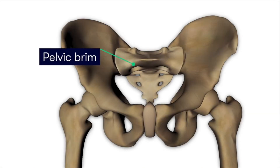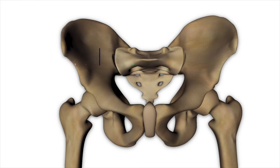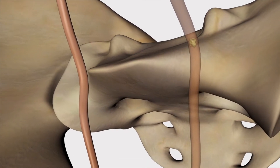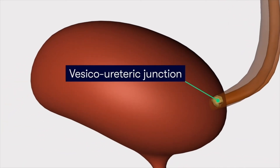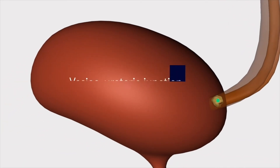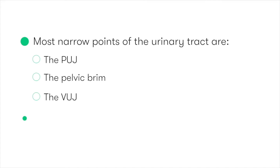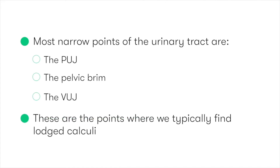The pelvic brim is the edge of the pelvic inlet and marks the opening into the lesser pelvis, in which we find the urinary bladder. The final common location for urinary tract stones is at the point where the ureter enters the bladder, and we refer to this as the vesico-ureteric junction, or VUJ. As these three locations are the most narrowed points of the urinary tract, if stones develop and are of large enough size to become lodged, it's typically at these three points that they will do so.